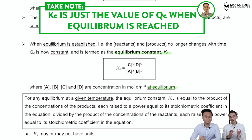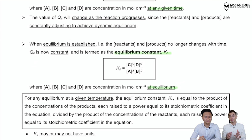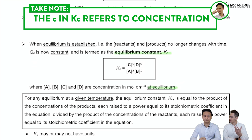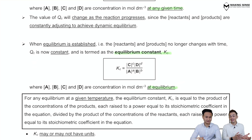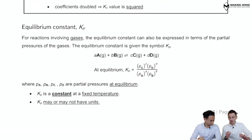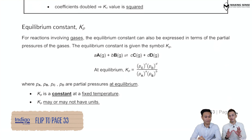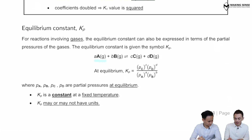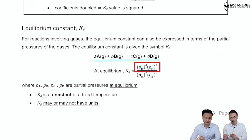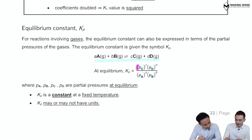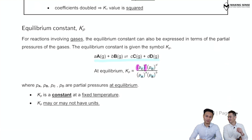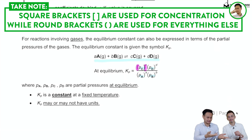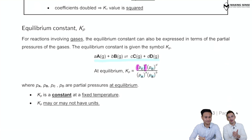This Qc and Kc can also be applied to pressure, especially when dealing with gaseous reactants and products. The 'C' stands for concentration. If you're dealing with gases, the term we usually use is pressure. So instead of Kc, we use Kp to denote equilibrium constants for gaseous reactions. The idea is identical — just the ratio of partial pressures of products over reactants, using round brackets instead of square brackets, since square brackets denote concentration.